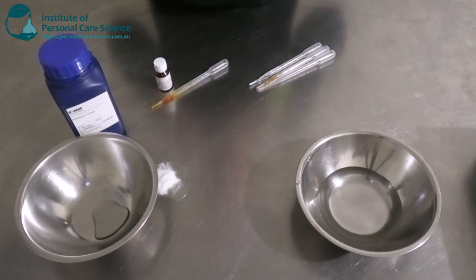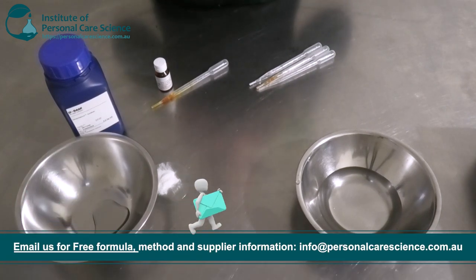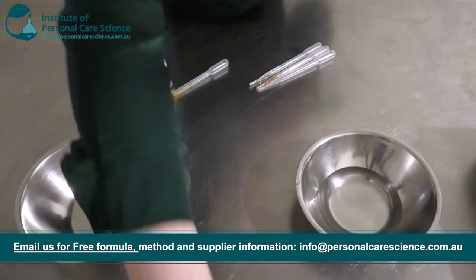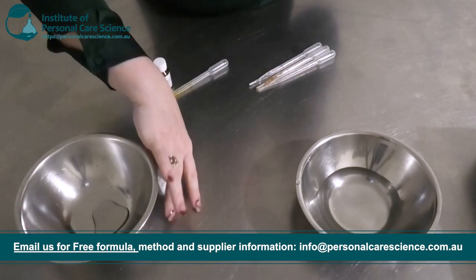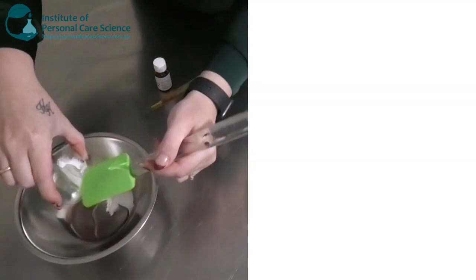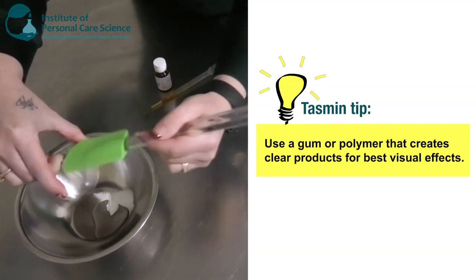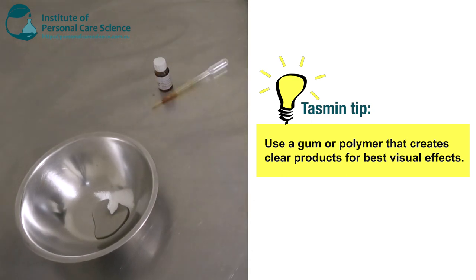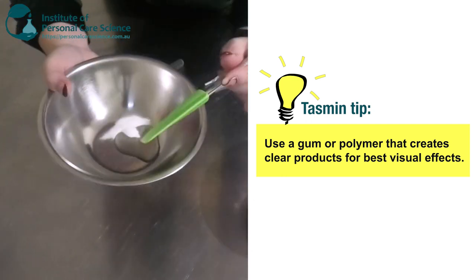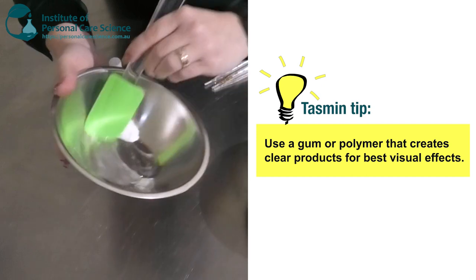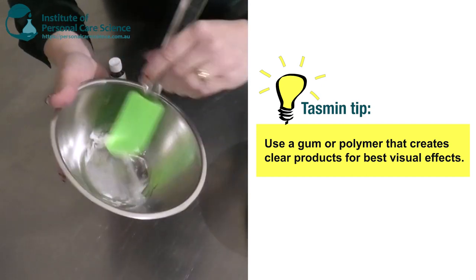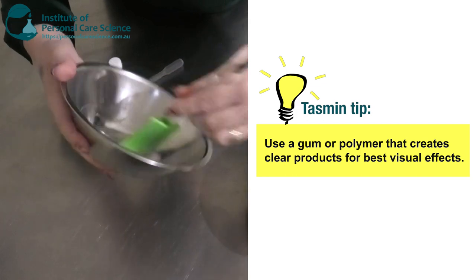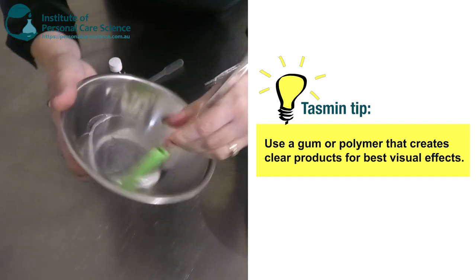To build my serum I'm going to be using a very clear grade of xanthan gum. This is the Fidescence by BASF. This is probably the most clear grade of xanthan gum I've ever seen. If you are using a different gum or if you want to go down the road of using a polymer, make sure that it is one that formulates clear products. It's very important to get that really good visual effect in your serum. This grade is also very easy to slurry and I find it's not as gloopy as other grades of xanthan gum either.